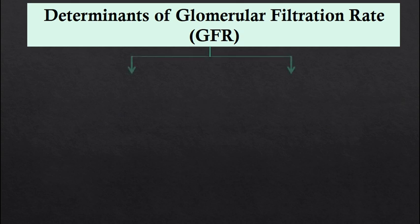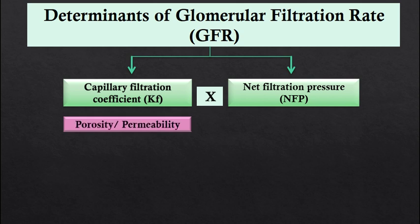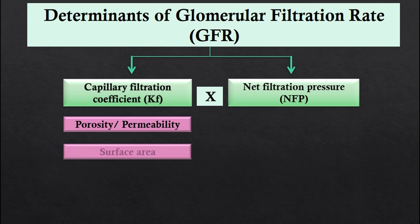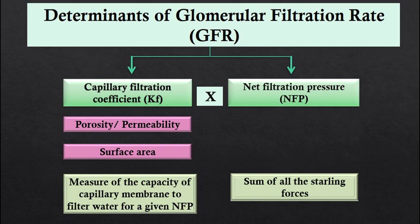The determinants of GFR are the same as those of capillary filtration: the capillary filtration coefficient and net filtration pressure. The capillary filtration coefficient depends on the permeability or porosity of the capillary — also called hydraulic conductivity — and the surface area of the capillaries. The filtration coefficient is defined as a measure of the capacity of the capillary membrane to filter water for a given net filtration pressure, or a measure of the hydraulic conductivity and surface area of the capillary membrane.